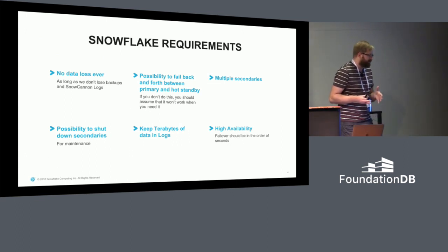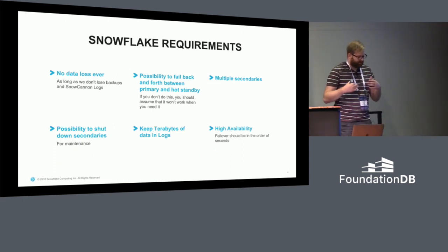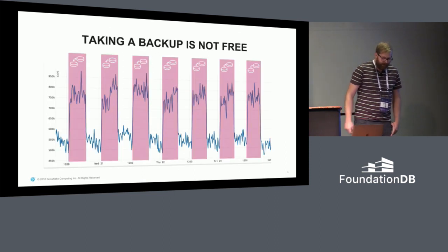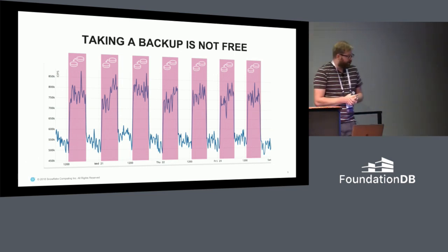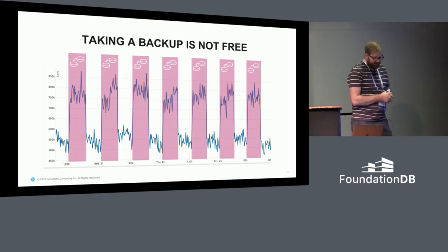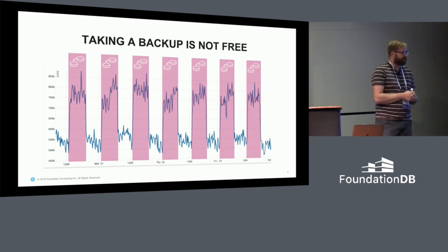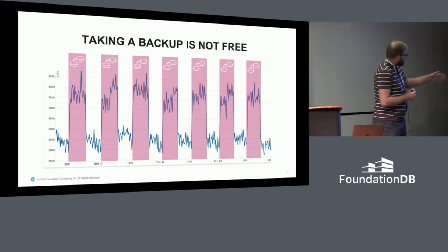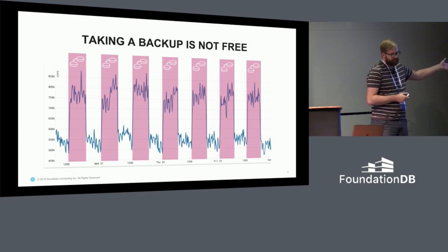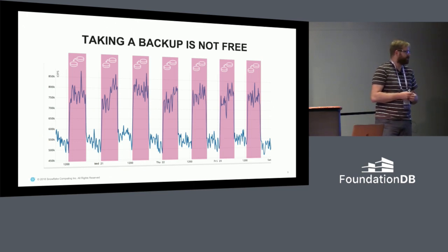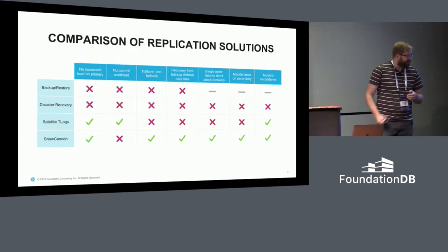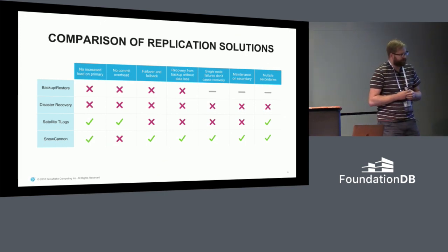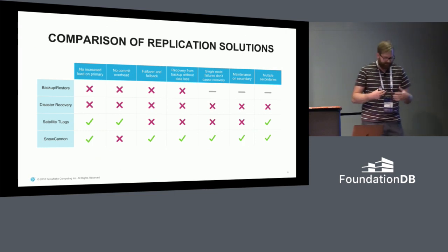We will see a bit later how that is useful. The solution should be as highly available as possible — correctness is more important than availability, but we still want to optimize for availability as much as we can. The first solution FDB implemented in this space was backups, and that is what we started running with. However, backups are not free. One of our production clusters shows the sum of all disk operations over time, and the red areas mark where we are running a backup process. Roughly, the number of disk operations doubles as soon as we run a backup. This got better with FDB 6, but the cost is still there, and this cost is also part of the disaster recovery solution within FDB since it builds on top of the backup mechanism.